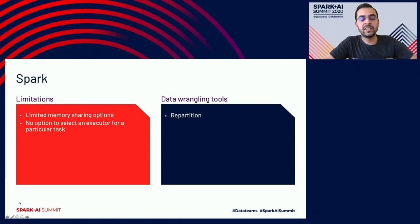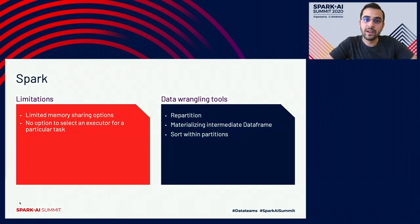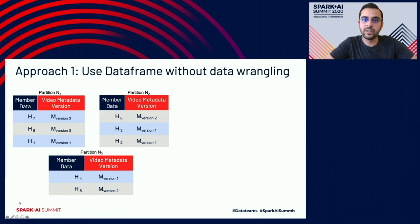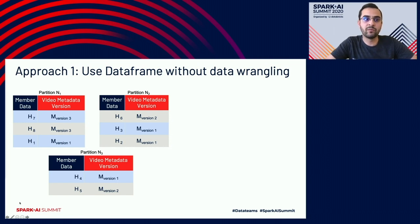While those are the Spark limitations, we do get multiple data-ranging tools from Spark: repartitioning, materializing intermediate data frames, and sorting within partitions. In today's talk we'll try all three. The first three approaches don't work. The fourth one tends toward a solution but doesn't work fully. Approach five is the one that works — so pay close attention to approaches four and five.